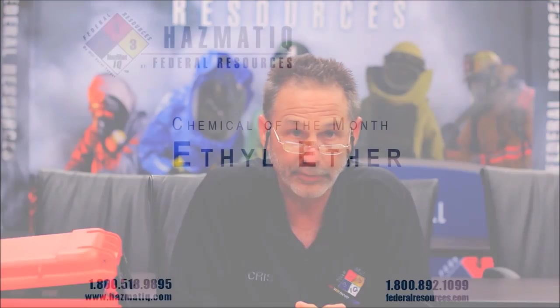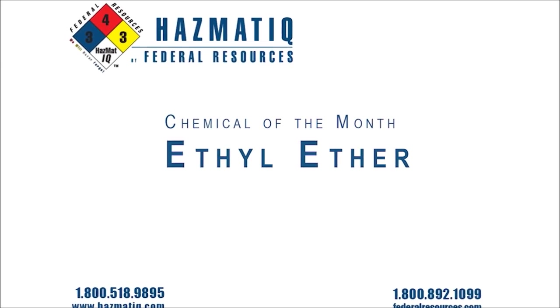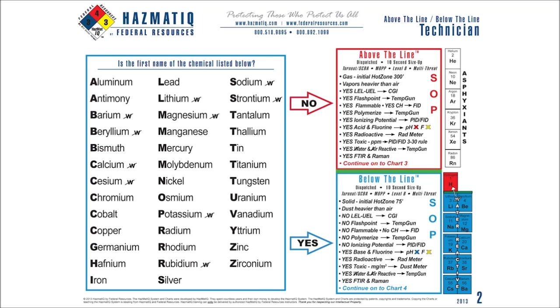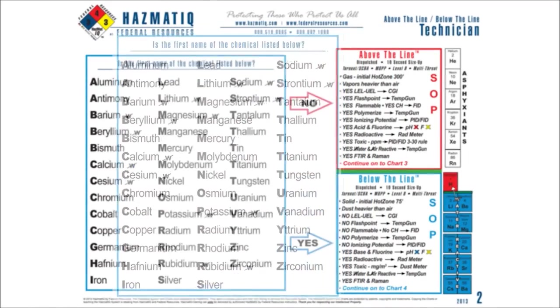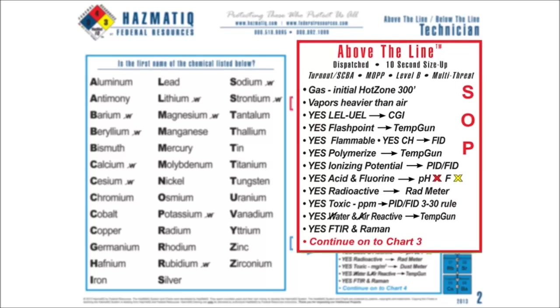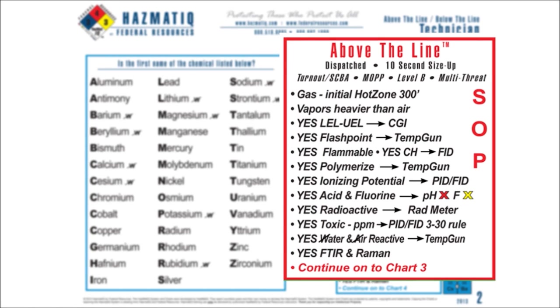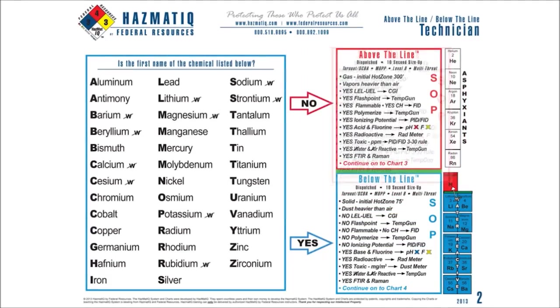Bring out your charts, the 2013 versions, and bring out your NIOSH guide that you got in the classroom. The chemical we're going to run today is ethyl ether. On step number one, within 20 seconds I go to chart two. I go down that left column that starts with aluminum, down to the E's, and I see that the word ethyl is not there. So I say no, I go to the arrow that says no, which points to above the line. I tell my crew: above the line. Immediately everyone knows the hazards, the physical properties, the toxicology, what to wear, and what meters to bring in.